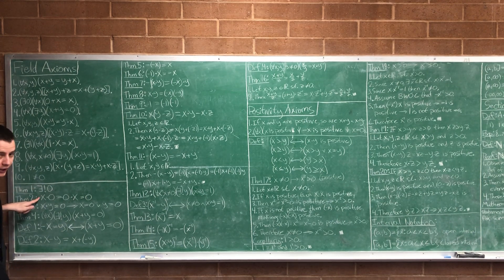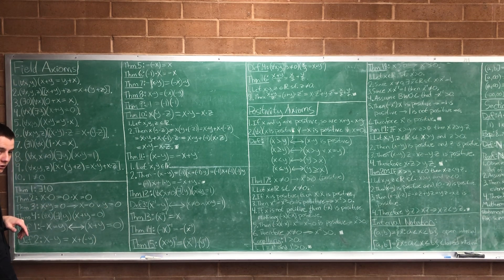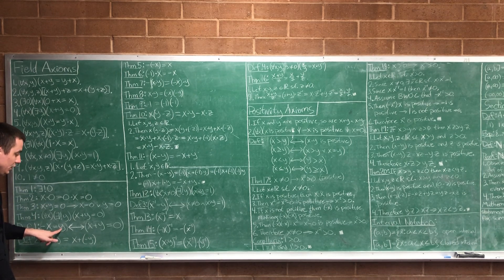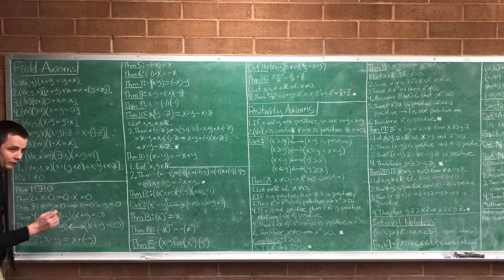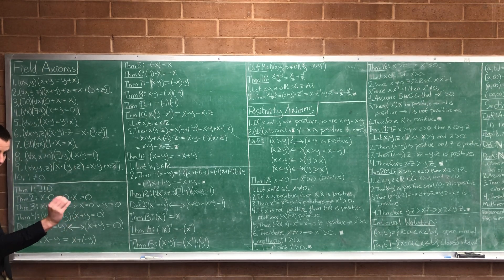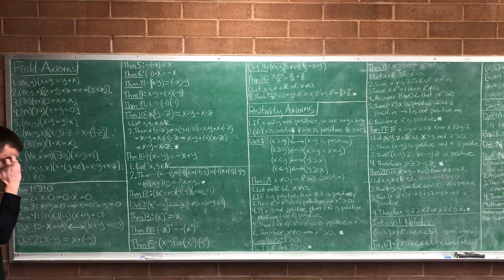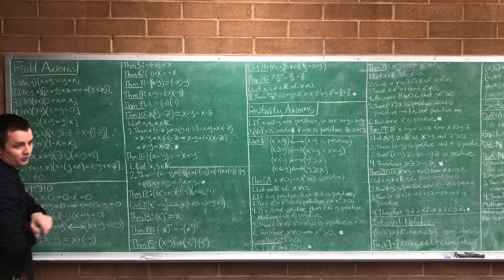Our next proof was that any number times zero is zero. Then we proved that if the product of two numbers is zero, then one of the numbers was zero. Then we proved that for every x, there's one and only one additive inverse element. So we defined negative x to be the y that makes x plus y equal to zero. Since there is one and only one such y, we can define it, and we call that y negative x. And then we defined subtraction: x minus y is the same thing as x plus negative y.